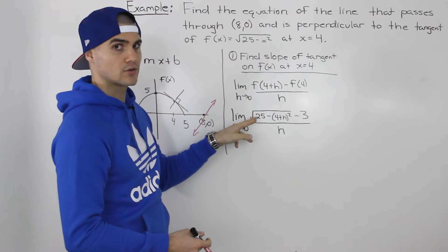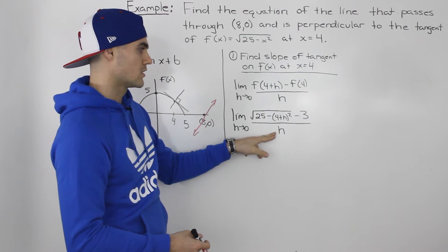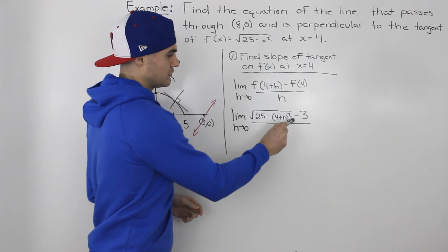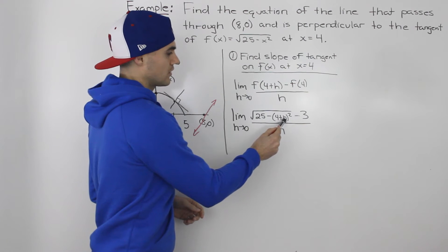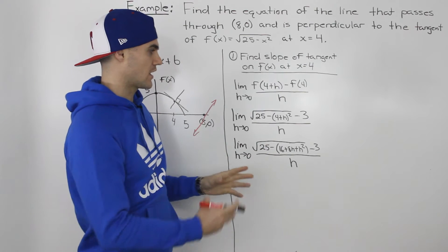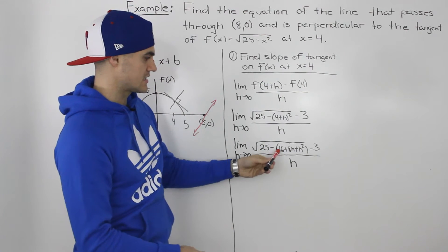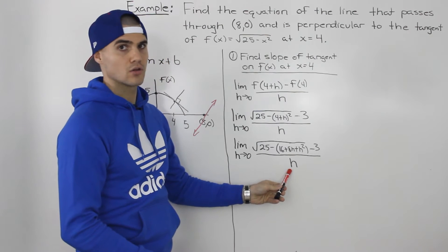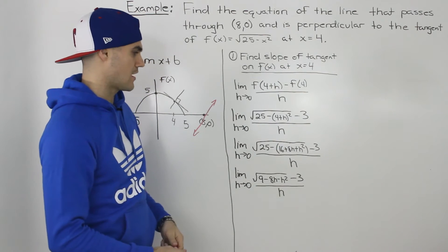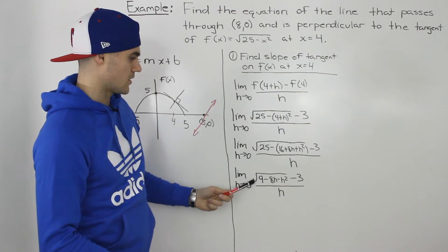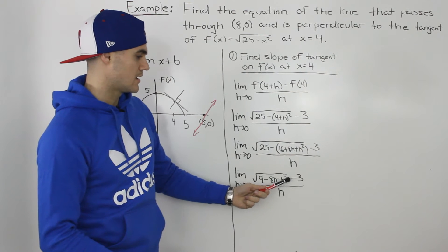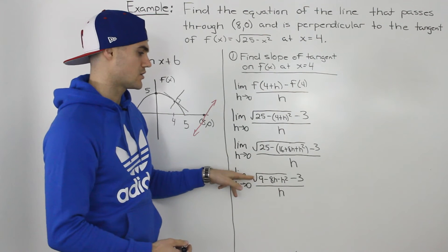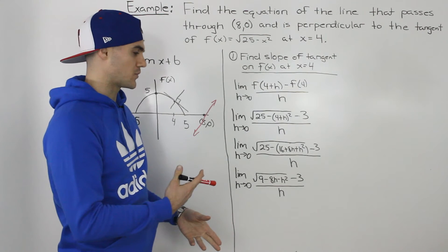Because we're dealing with a radical and we have to get rid of this h in the denominator, hopefully by this point you can tell that we're going to have to rationalize this. But before we rationalize, let's simplify what's under the radical. Taking (4 + h) squared and foiling it out, we get 16 plus 8h plus h squared. We're still subtracting the 3 on the outside, all over h. Distributing the negative and simplifying, we end up with the limit as h goes to 0 of the square root of 9 minus 8h minus h squared, minus 3, all over h. And now we can rationalize the numerator so that h will cancel out in the denominator.